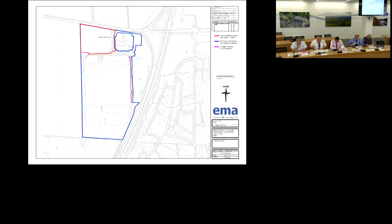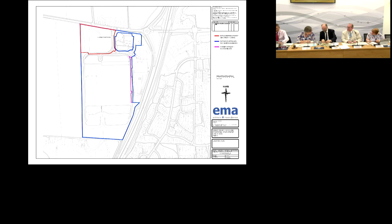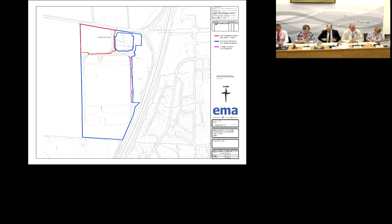The convener moved on to the next application: the erection of 43 dwelling houses, formation of a Suds Pond, landscaping and associated works at land 100 metres west of Glover Arms in East Huntingtower, Perth. Jamie Scott was asked to introduce the report.